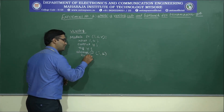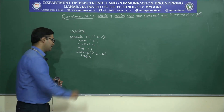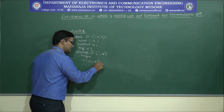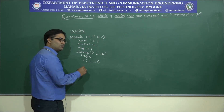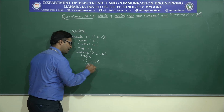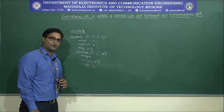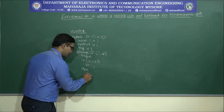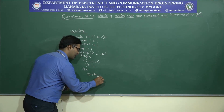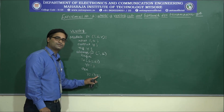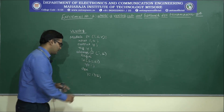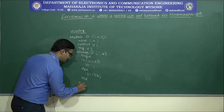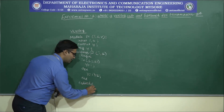We start the statement with an if-else begin block. If the select signal s equals 1, the output y follows the input i. Else, the output y is in the high impedance state, represented as 1-bit high impedance. We end the declaration and end the module with 'endmodule'. This completes the Verilog code for the transmission gate.